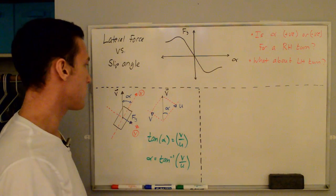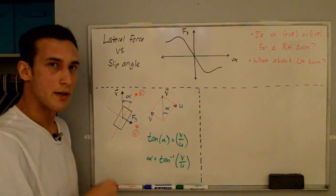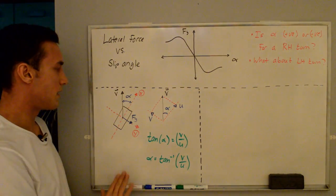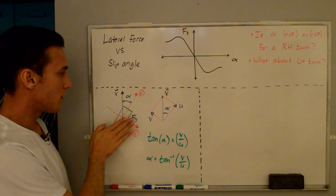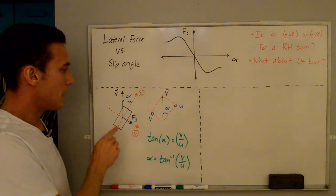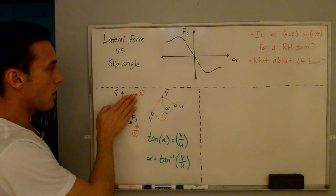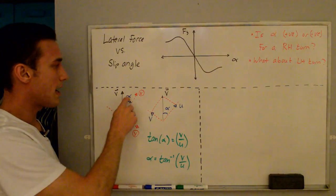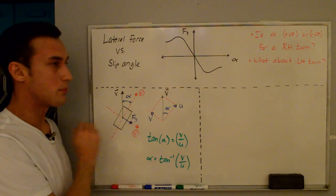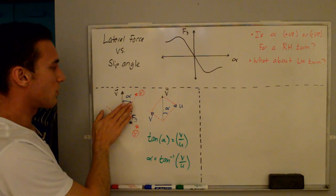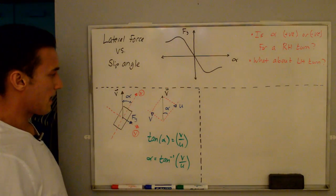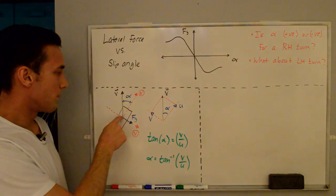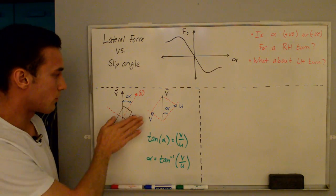We can figure this out by looking at an overhead view of a tire. The V vector is the velocity vector — that's where the tire is currently going. The tire is then turned to provide some lateral force. If we're going this way and turning this way, the car would be trying to go right, so this looks like a right-hand turn. The slip angle alpha is defined as the angle between where the tire is headed and where it's pointed — so between the direction of V and the direction the tire faces along its x-axis.